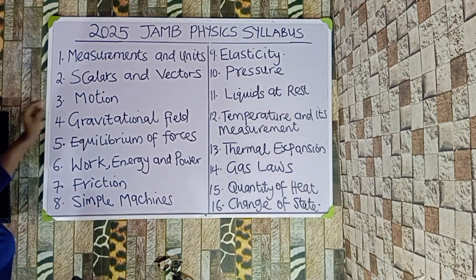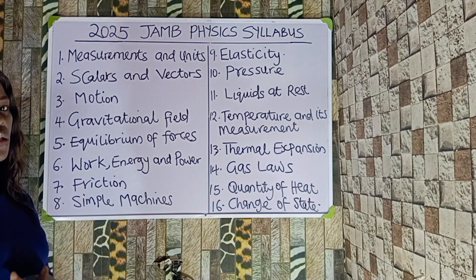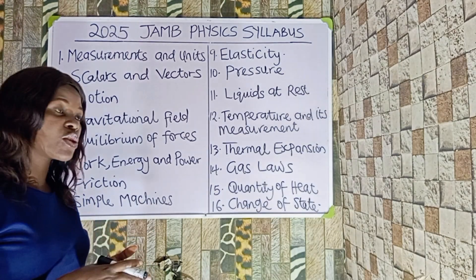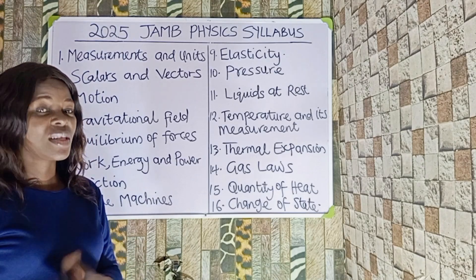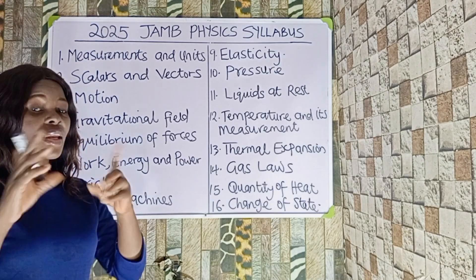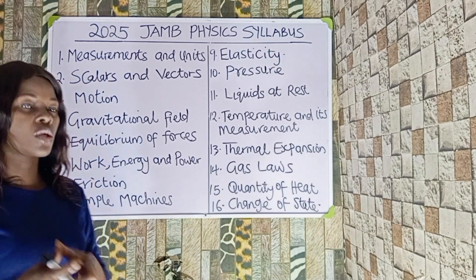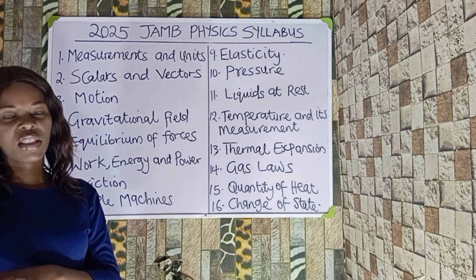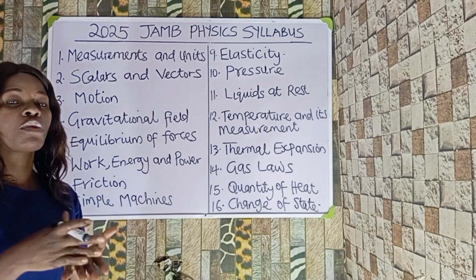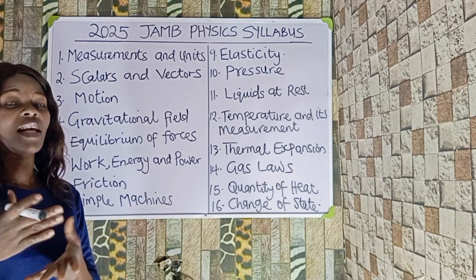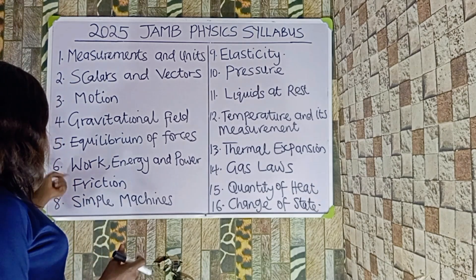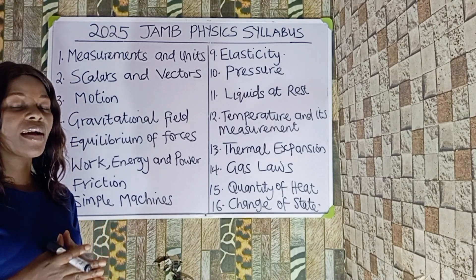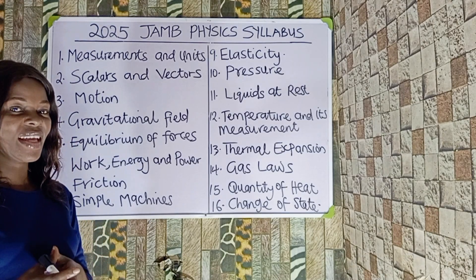Number three is motion. What is motion, the types of motion — it also includes simple harmonic motion, linear momentum, circular motion — all included under motion. The next topic we're going to look at is equilibrium of forces. We're going to look at equilibrium of forces and the questions associated with equilibrium of forces. Then we get to work, energy, and power, and the relationship between work and energy.